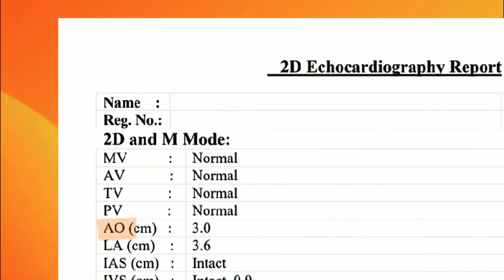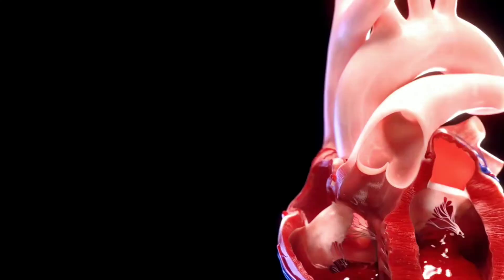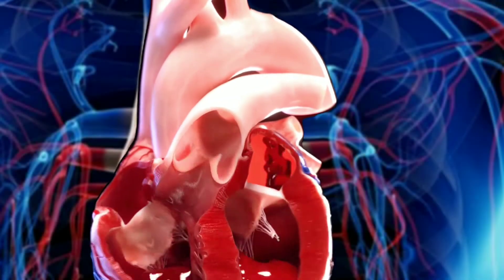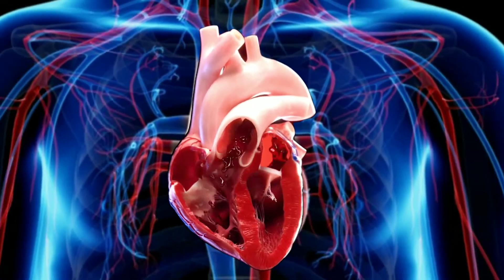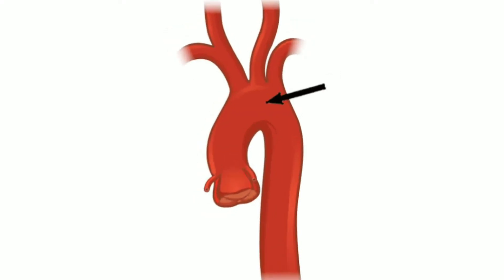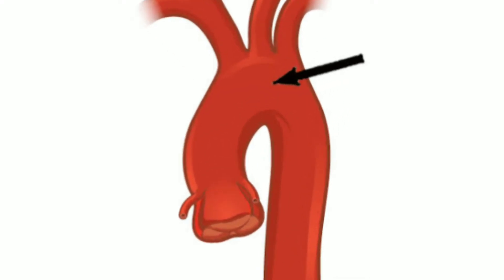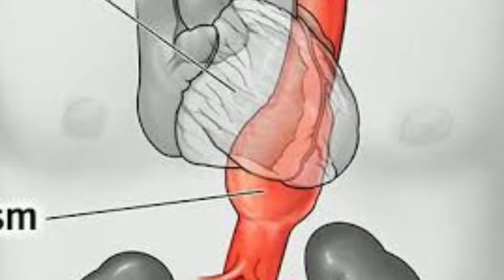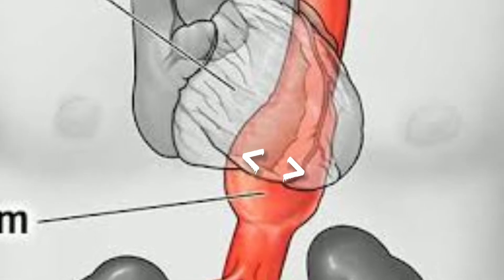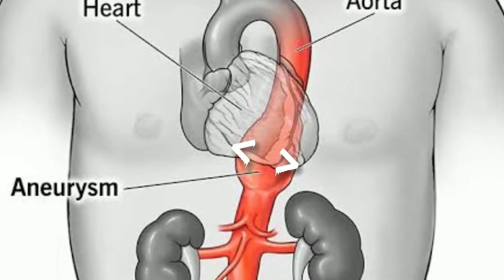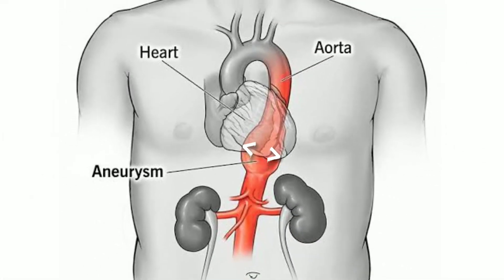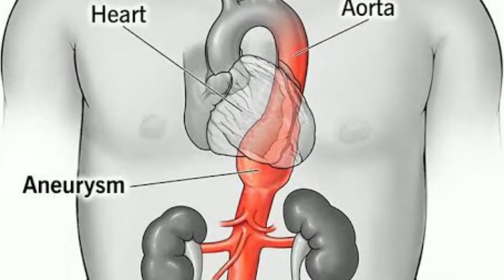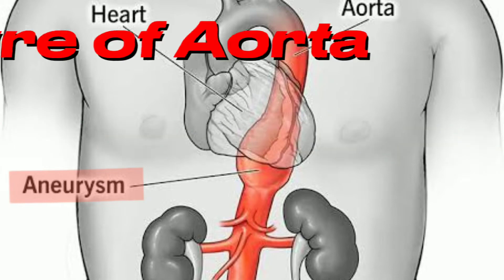Next is AO, which means aorta. The aorta sends blood to all parts of the body. The normal width of the aorta is less than 3 centimeters. More than 3 centimeters may lead to a life-threatening condition like aortic aneurysm, which may lead to aortic rupture.